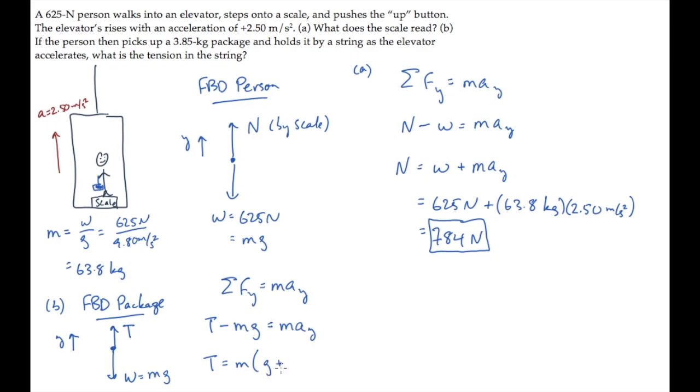So we can solve this expression for the tension T, and substitute all the known values, calculating to find that T equals 47.4 newtons.